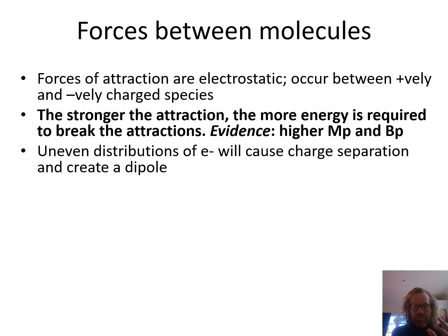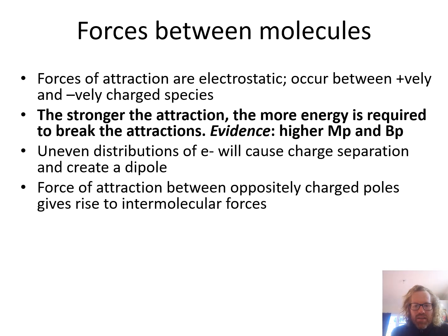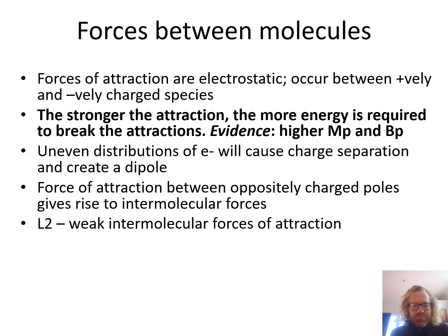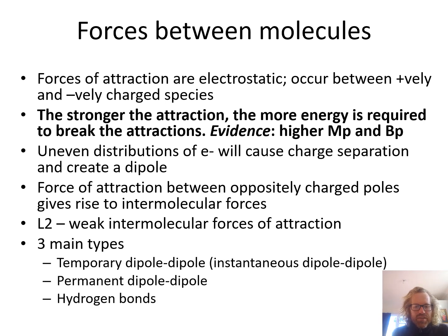If you get data about melting points and see an increase, you know there's an increase in attraction and you need to explain why. If you have an uneven distribution of electrons, like in a polar molecule, you've got a dipole, and that creates charges that attract each other. There are three types of intermolecular forces: temporary dipole-dipole attractions, also known as instantaneous dipole-dipole attractions, permanent dipole-dipole attractions, and hydrogen bonds.